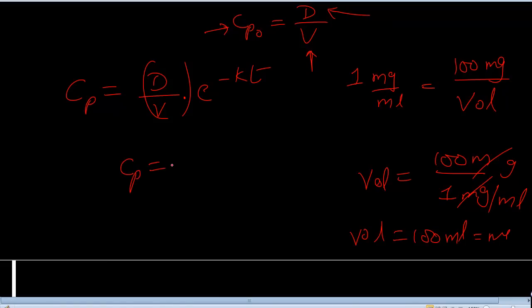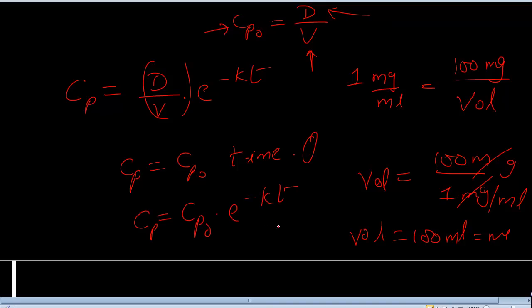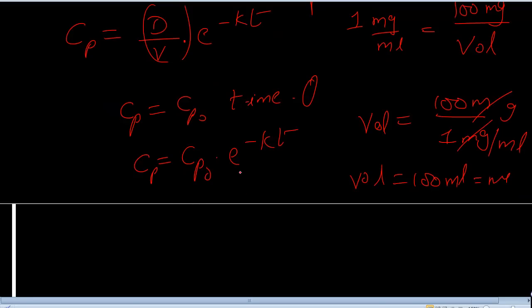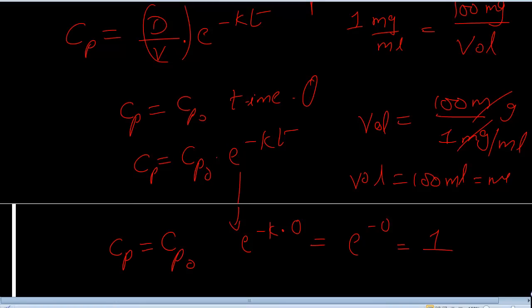Why is Cp equal to Cp0 at time zero? In the equation Cp equals Cp0 times e to the power of minus kt, at time zero: e to the power of minus k times 0 equals e to the power of 0, and anything to the power of 0 equals 1. So Cp equals Cp0 times 1, which means Cp equals Cp0.